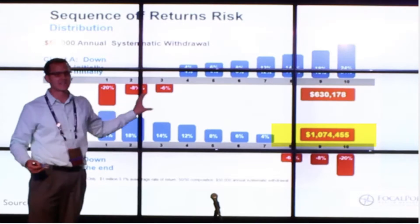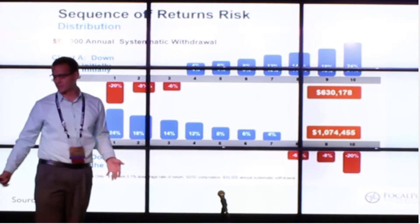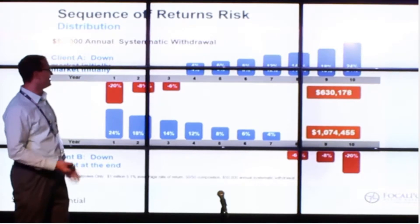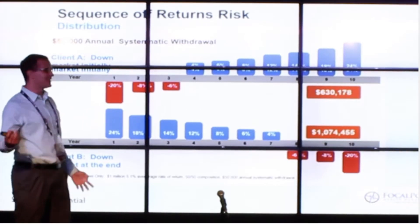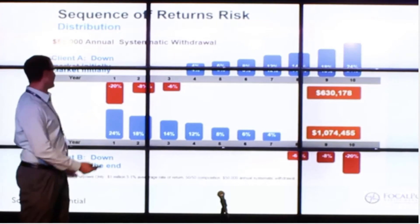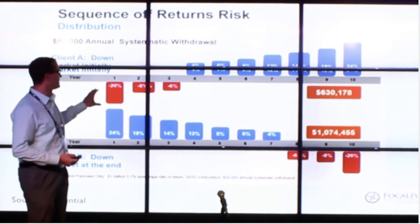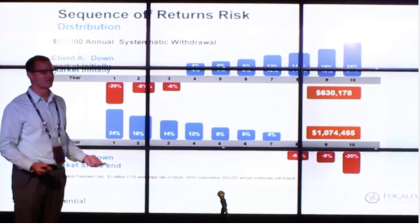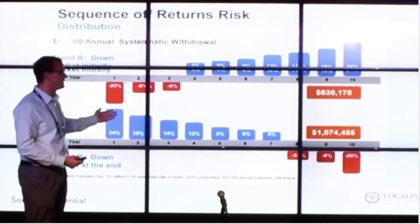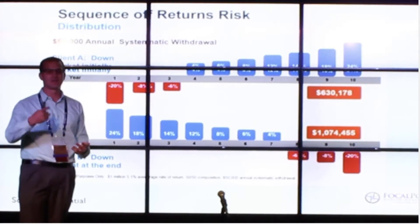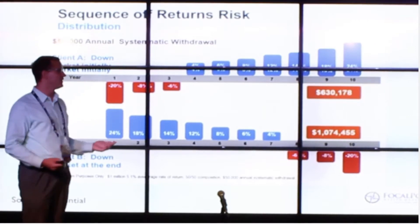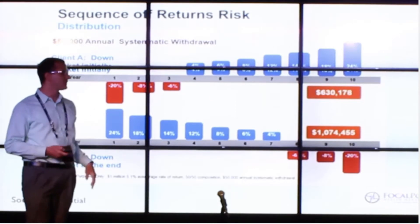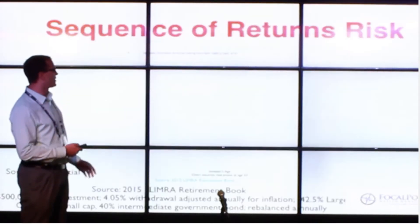They both averaged the exact same return. A lot of times what you don't see on CNBC — or as I call it, CNBS — is that no one can predict what the market's going to look like the day they retire. So if you retire and all of a sudden you've got a bad year, and you didn't have an advisor that already proactively planned for that, you're probably in for some bad news. Because now this person with $630,000 is going to be in a rough spot or run out of money.